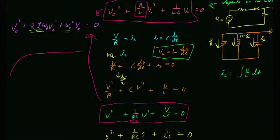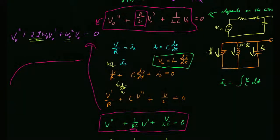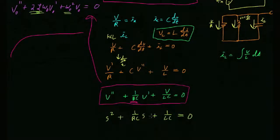A student asks: do you always need zeta and omega_naught, or can you just plug in component values? Yes — if doing a real problem you can just plug in resistor, capacitor, and inductor values, get the equation, and solve for s. If the roots are complex, say minus 1,000 ± 4,000j, thinking of those in terms of zeta and omega_naught is a more natural way to understand oscillation frequency and decay rate. But solving for s is sufficient.